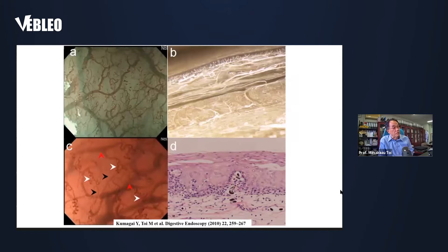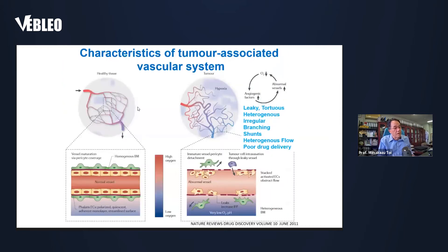This is another picture of esophageal cancer using endoscopic microscopy — a vital view of tumor angiogenesis. It is quite possible to identify the irregular shape. The vasculature has very fine new vascularization possible to see, and dilation is also quite possible to identify. This is another very nice view published around 10 years ago in Nature Reviews, summarizing the characteristics of the tumor-associated vascular system: it is leaky, tortuous, heterogeneous, irregular shape, irregular branching, with ulcers, shunts, and heterogeneous flow — meaning poor drug delivery, associated with therapeutic resistance.